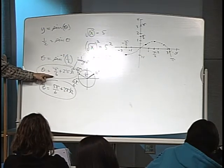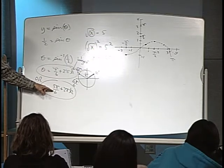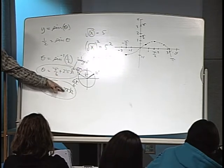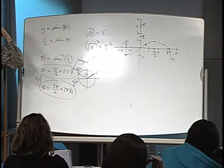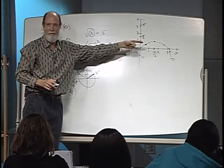Aren't there an infinite number of angles? 30 degrees, 150 degrees, 360 added or subtracted from it, multiples of 360? Right? Infinite number of spots. That thing does not pass a horizontal line test.